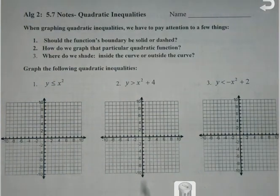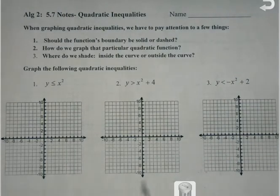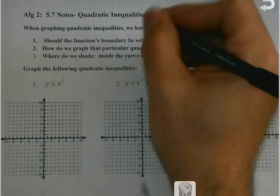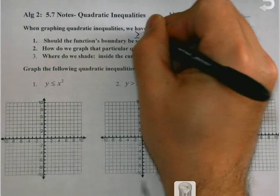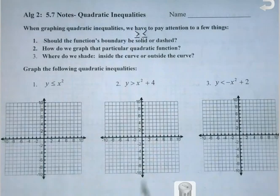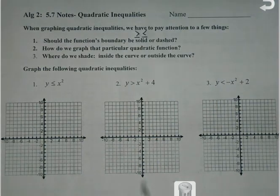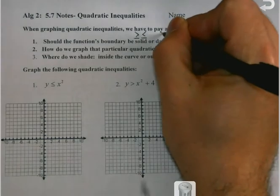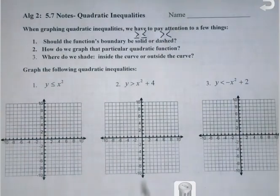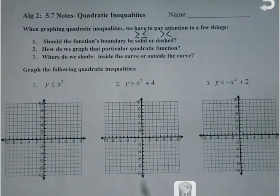When we graph quadratic inequalities, there are a couple of detailed things we have to pay attention to. One of them is, when we graph our parabolas, they're not always necessarily going to be solid lines anymore. If you see an or-equal sign underneath the inequality, we're going to use a solid-lined parabola. However, if it's just less than or greater than, we're going to use a dashed or dotted line to signify the difference.